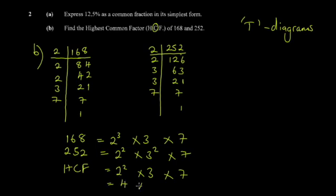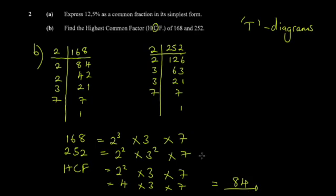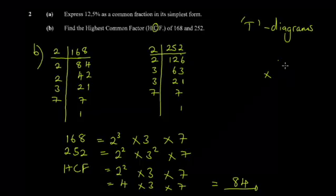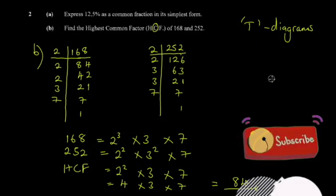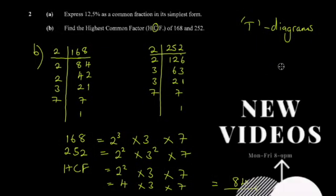Multiply these together: two squared is 4, times 3 gives 12, times 7 — that's 10 times 7 equals 70, plus 2 times 7 equals 14, giving 84. So the HCF is 84. That's it for this video — catch you in the next one.